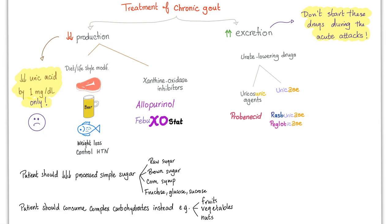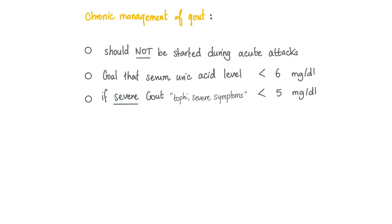Decreasing production of uric acid through diet typically only reduces it by about one milligram. Patients should reduce processed simple sugars such as raw sugar, brown sugar, corn syrup, and fructose, and consume complex carbohydrates like fruits, vegetables, and nuts instead. Do not start increasing uric acid excretion during an acute attack — chronic management should not be initiated during the acute attack. The target serum uric acid is less than 6 mg/dL, or less than 5 mg/dL for severe gout with tophi and severe symptoms.